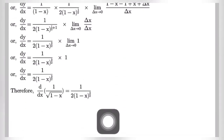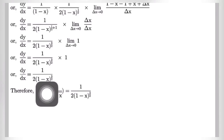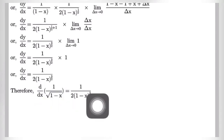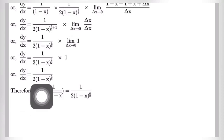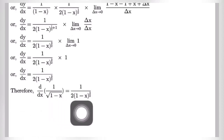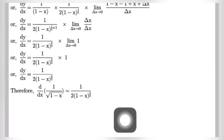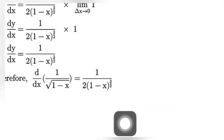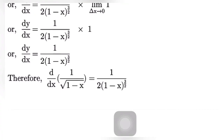Finally, dy by dx is equal to 1 by 2 times 1 minus x to the power 3 by 2. Therefore d by dx of 1 by root under 1 minus x is equal to 1 divided by 2 times 1 minus x to the power 3 by 2. This shows that the derivative of the function 1 divided by root under 1 minus x can be found using the first principle of derivative.